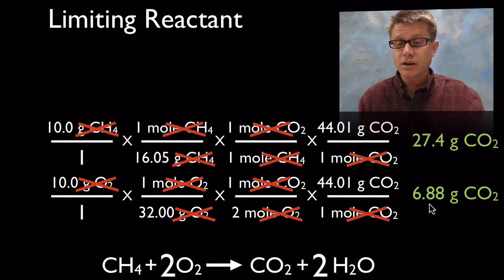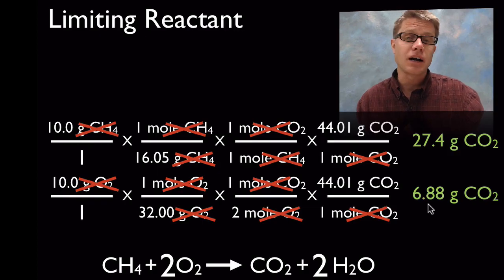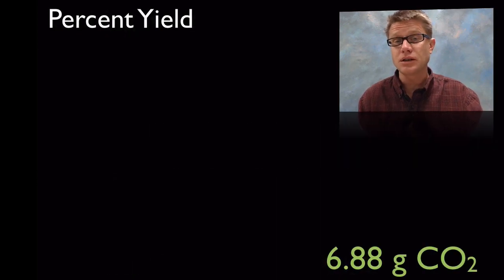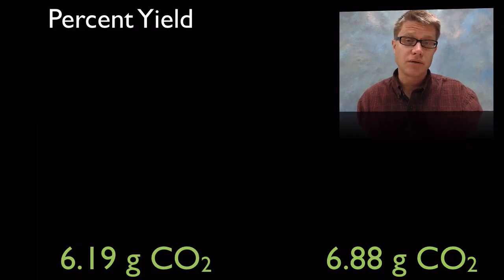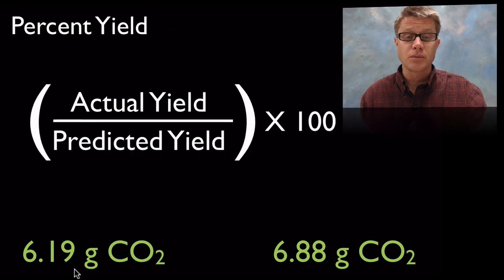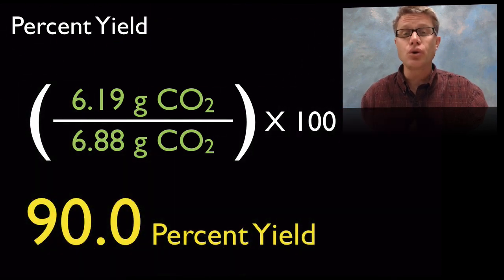What we're looking at here is a predicted yield — how much you think you could get. Do you think in a reaction you're ever going to get that full amount? No — it's never going to go all the way to completion. Think of all those billions and billions of atoms trying to combine together. This is simply a predicted yield. We can use the predicted yield and the actual yield to figure out the percent yield. In other words, this is how much we could get theoretically, and this is how much we did get. Using the formula — actual yield divided by predicted yield — we get the percent yield. So we got 90% of what we could have gotten, and we'll never approach 100%, but we can get pretty close.